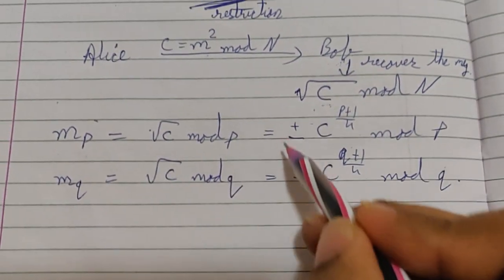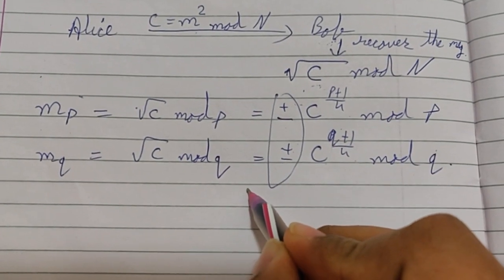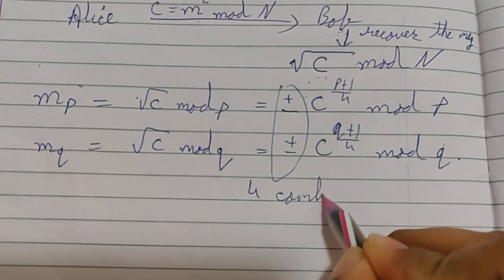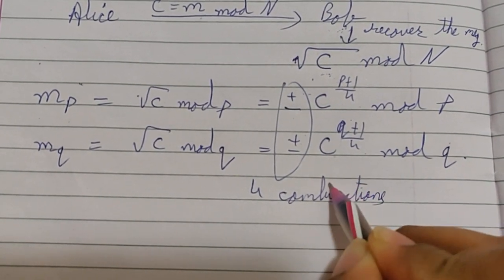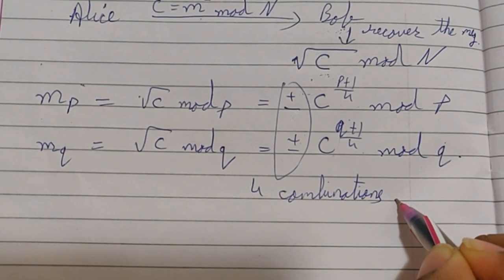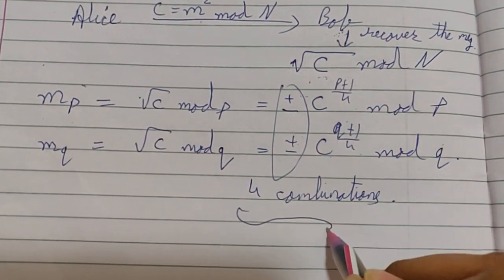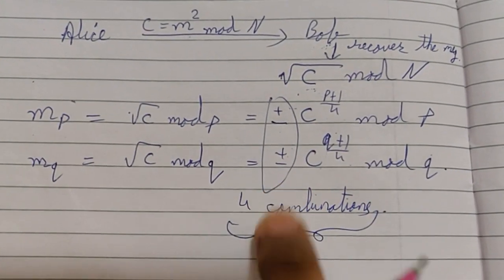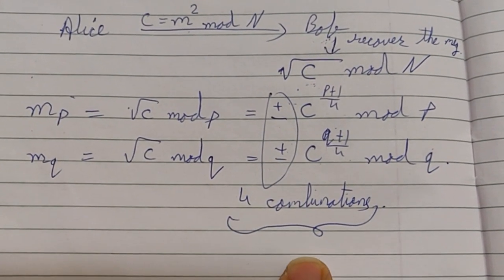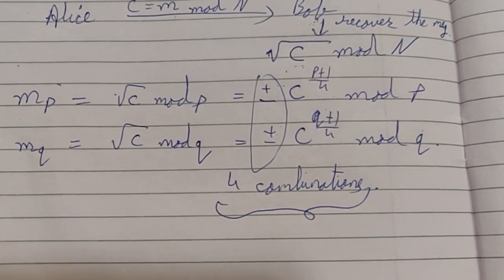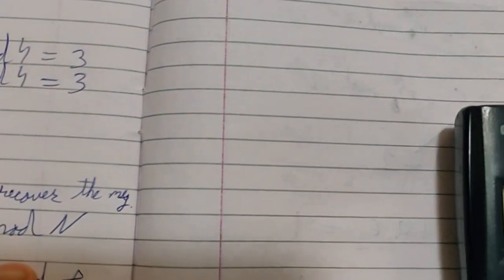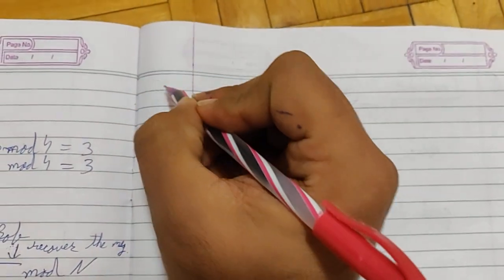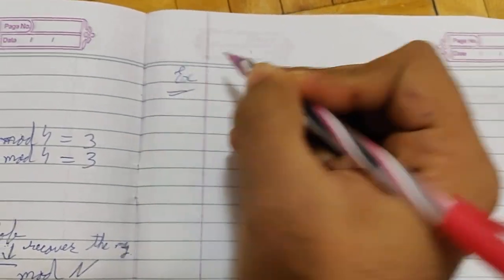There are four total combinations, and we have to check which one is the correct plain text. To solve this we take the help of the Chinese Remainder Theorem (CRT). Let's take an example to understand it properly.